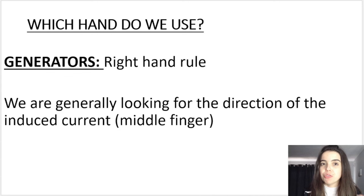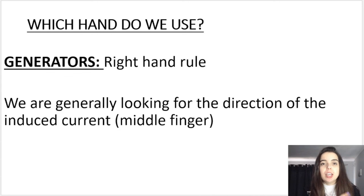Just note that when we're working with a generator, we are usually looking for the direction of the current. And if you think about it, it makes sense. Because remember, mechanical energy is being converted or transformed into electrical energy. We are inducing or creating a current in the coil. So we want to know which direction that current is flowing. So for generators, we usually use our right hand to determine which way the current is flowing in the coil.